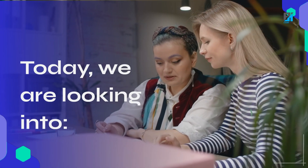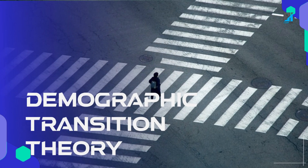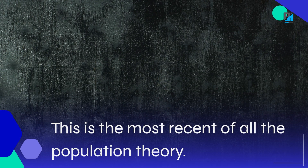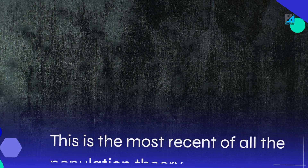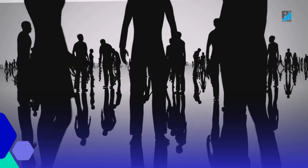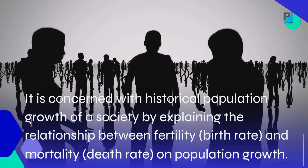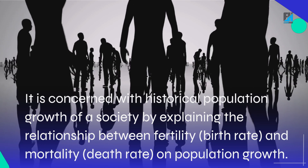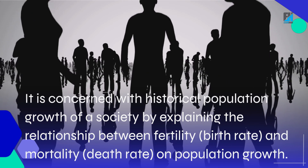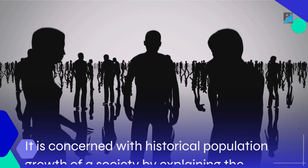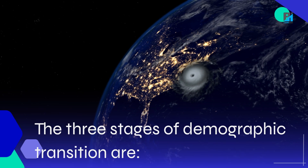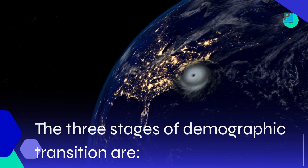Today, we are looking into Demographic Transition Theory. This is the most recent of all the population theories. It is concerned with historical population growth of a society by explaining the relationship between fertility, birth rate, and mortality, death rate, on population growth. The three stages of demographic transition are: